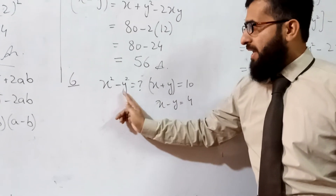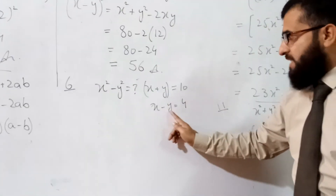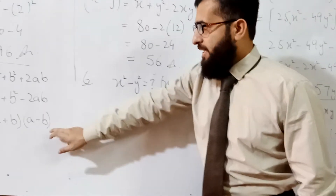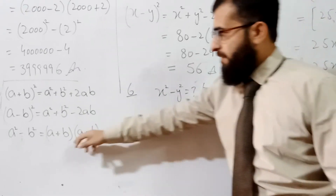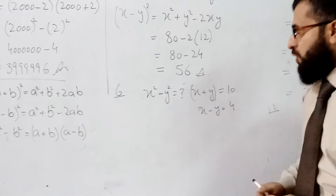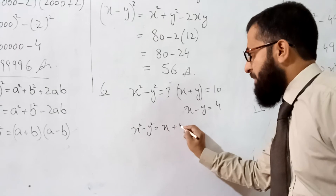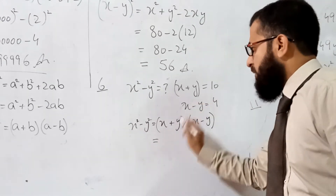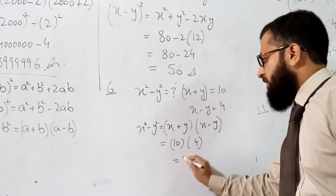Question 6: Find the value of x² − y², given x + y = 10 and x − y = 4. This matches the third formula: a² − b² = (a + b)(a − b). So x² − y² = (x + y)(x − y) = 10 × 4 = 40.